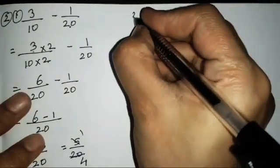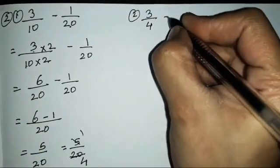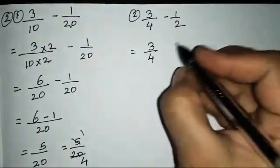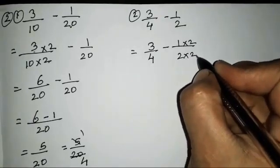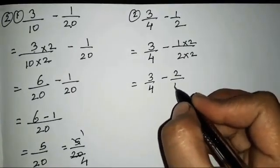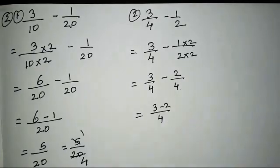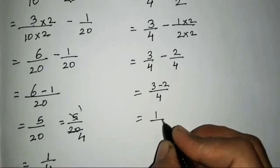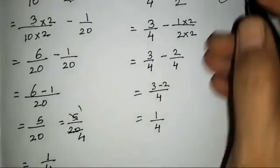The second subtraction sum is 3/4 minus 1/2. We keep 3/4 as it is and multiply 1/2 by 2/2 to get 2/4. Then 3 minus 2 is 1, so the answer is 1/4. No further simplification needed.